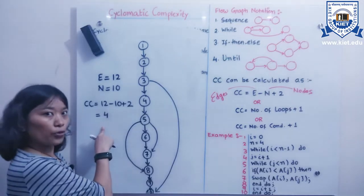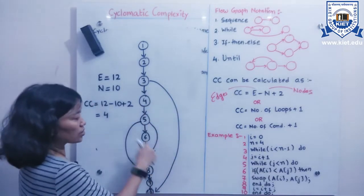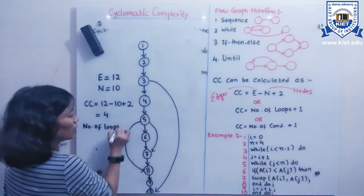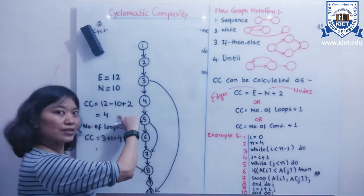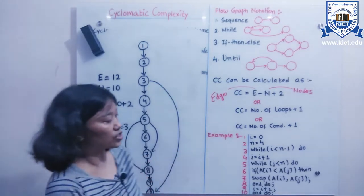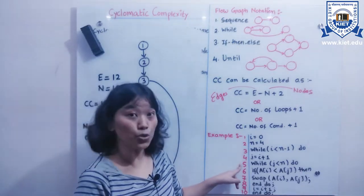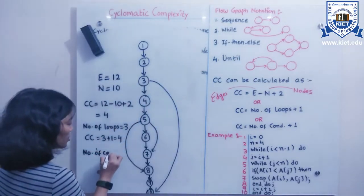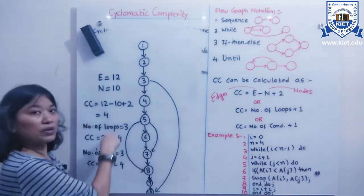Verifying with the second formula: counting the number of loops — there are 3 loops in the program. So CC = 3 + 1 = 4. Same answer. For the third formula, checking the number of control conditions directly in the source code: there are two while loops and one if statement — three conditions total. So CC = 3 + 1 = 4 again. All three formulas agree.